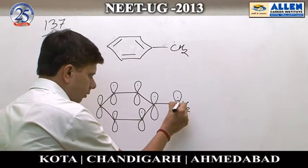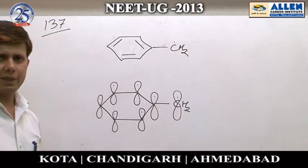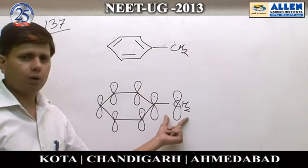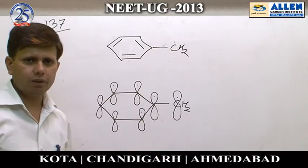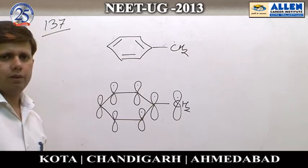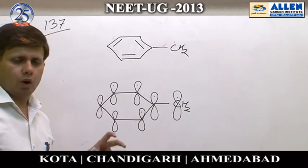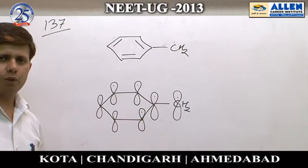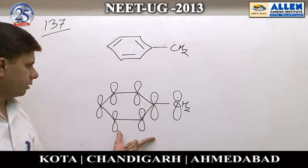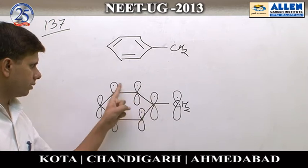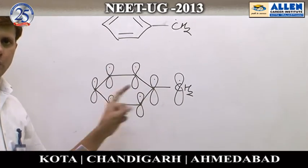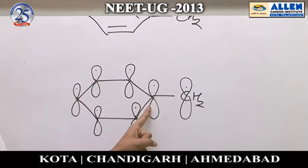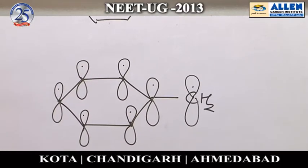These 6 p orbitals are responsible for aromaticity in this molecule. Although this p orbital is also present in benzoyl free radical having 1 electron, but it is not responsible for aromaticity. In Hückel's rule, only those electrons which are present in the orbitals of atoms involved in ring formation are responsible for aromaticity. So in this case, these 6 electrons — 1 present in each p orbital of the carbon atoms of the benzene ring — are responsible for aromaticity.